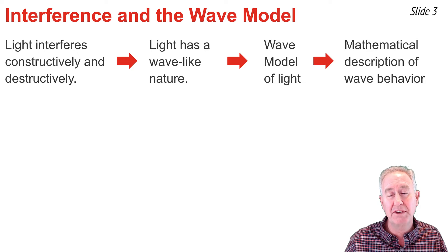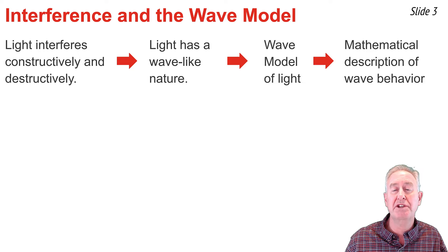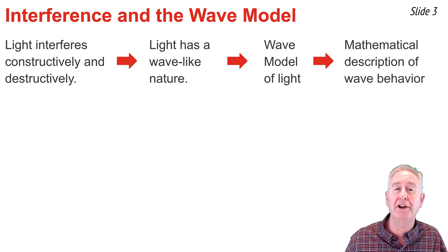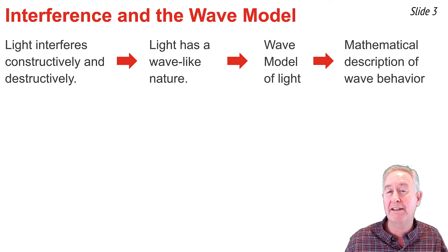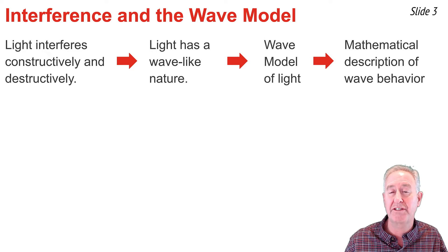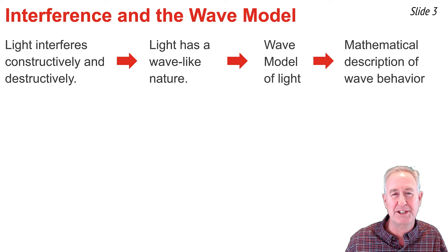In this video and the two videos that follow, I will be discussing a mathematical model for understanding two-point source interference patterns and eventually associating features of the pattern with the wavelength of the light that causes it.